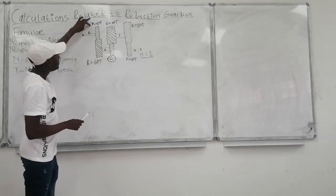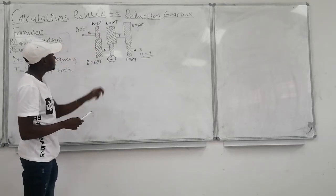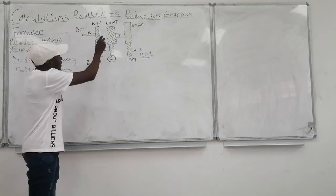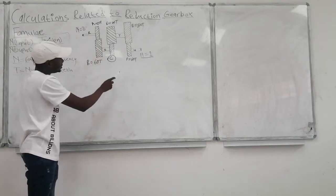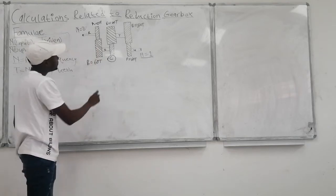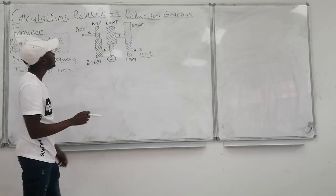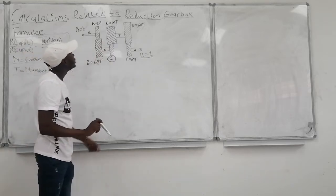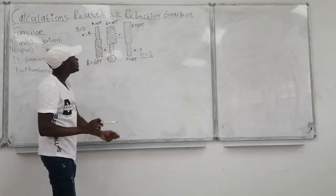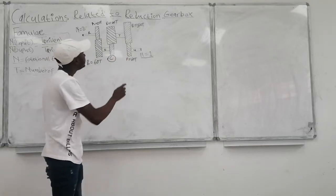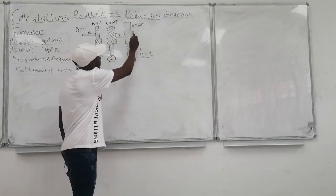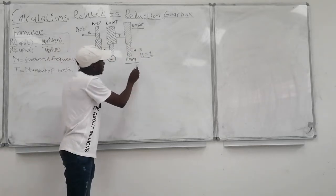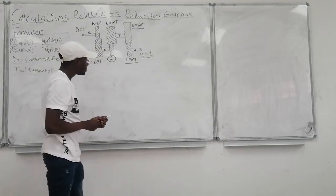Gear A has 20 teeth, gear B has 60 teeth, gear C is unknown which we are going to calculate, gear D has 40 teeth, gear E has 50 teeth, and gear F has 60 teeth.